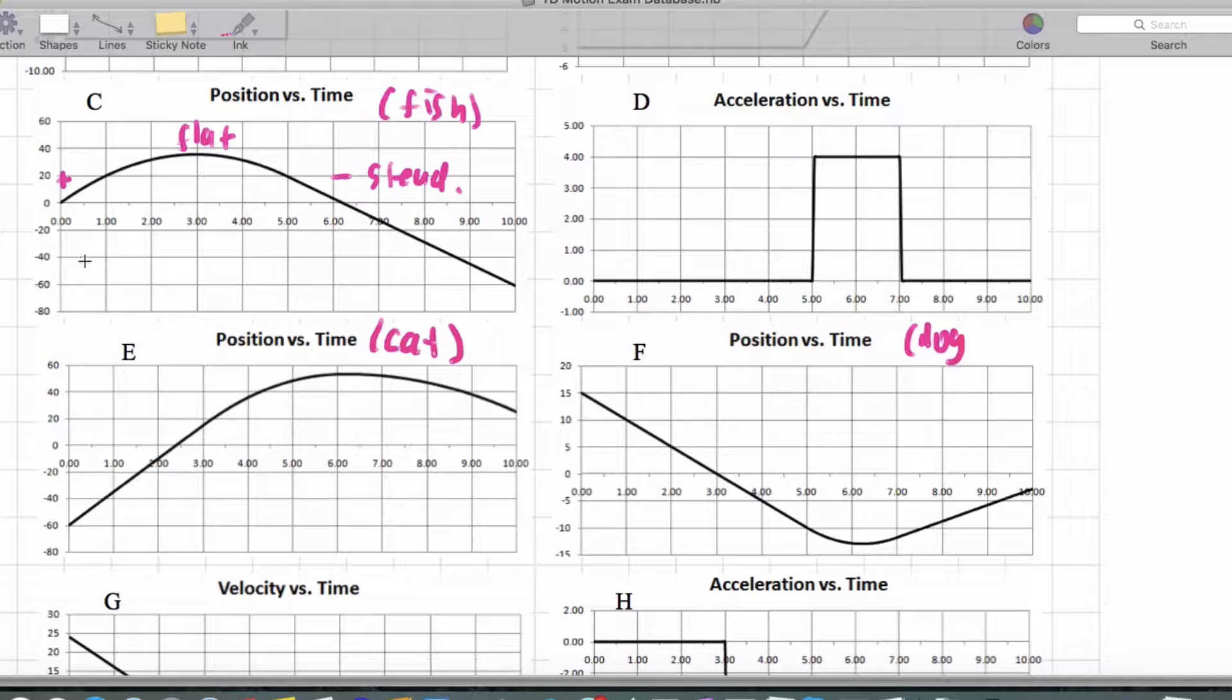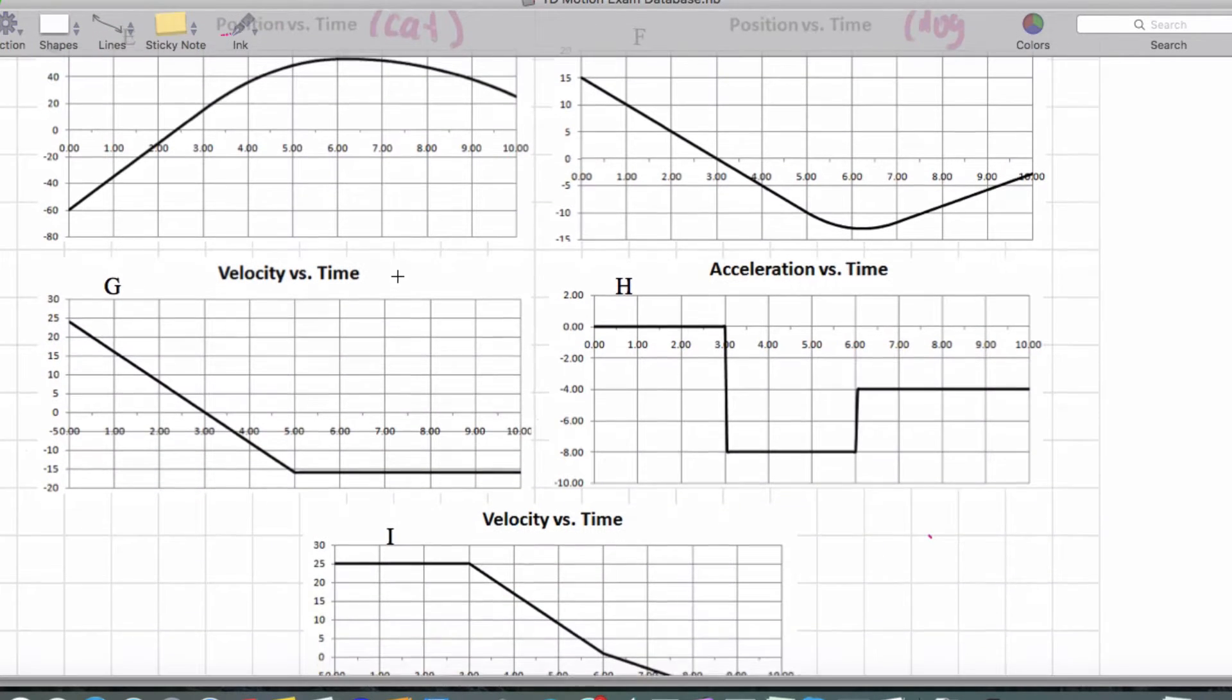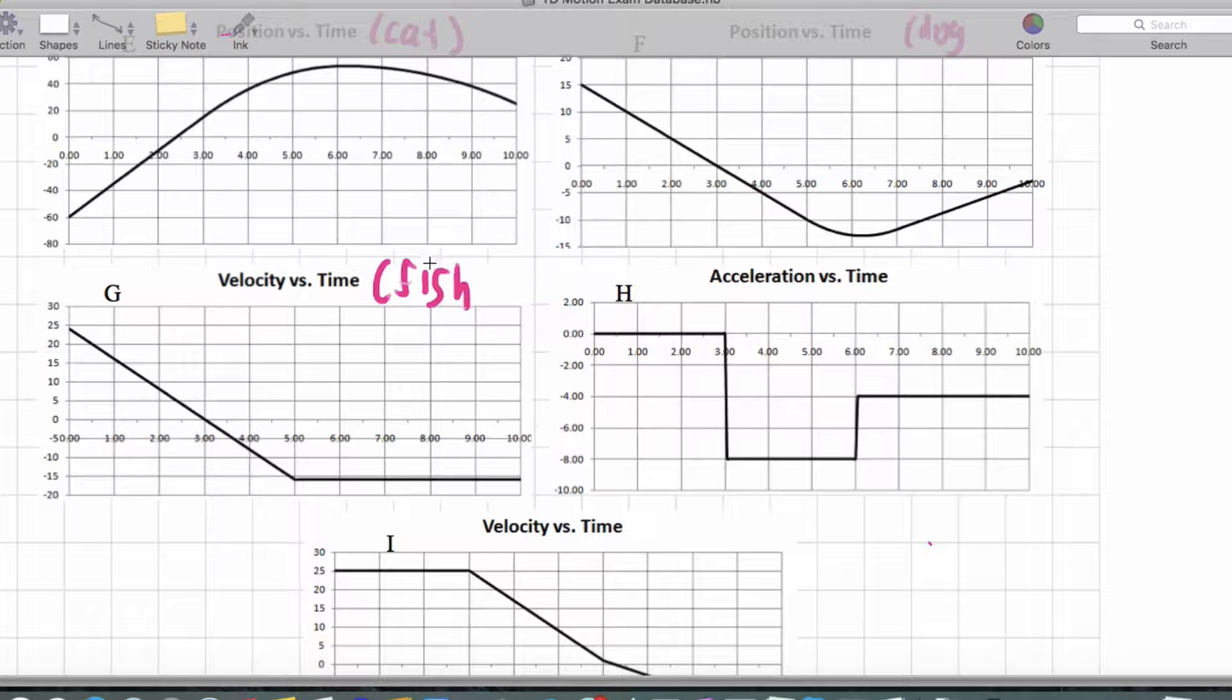A positive slope that becomes flat and then speeds up a little bit going negative and then levels off to a steady negative speed. So we're looking for something like this for the fish, which is clearly graph G.